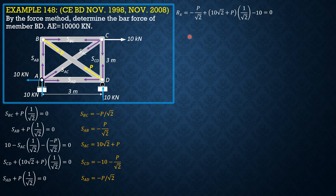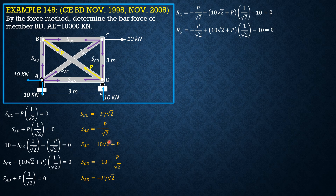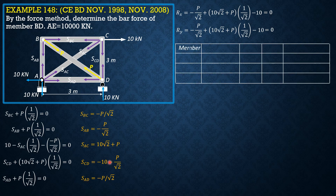Summation forces Y at A: S_AB = −P/√2, plus vertical component of S_AC times 1/√2, then minus 10, and it is also 0 — so that checks. There are only two members involved: S_AC and S_AD. The rest will be 0 when we set P = 0. After tabulating, we only enter the relevant members. We have: member, S in kilonewtons, partial of S with respect to P, length in meters, and the product S·(∂S/∂P)·L in kilonewton-meters. The members involved will be AC and CD only.